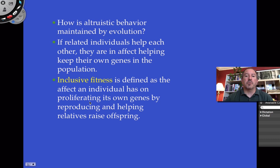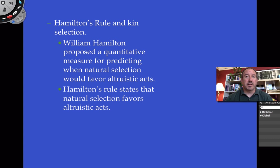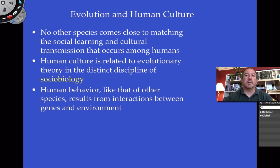Inclusive fitness is defined as the effect an individual has on proliferating its own genes by reproducing and helping relatives — helping raise the offspring of other family members. In fact, you're actually doing a somewhat selfish act in the end. There's a professor who studied this and put a mathematical quantitative approach to it called Hamilton's rule. You can actually predict that animals are more likely to put themselves in harm's way to protect closely related family members, because that assures that their genes will be perpetuated in the next gene pool.